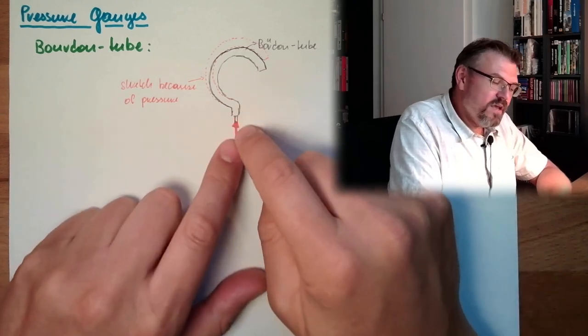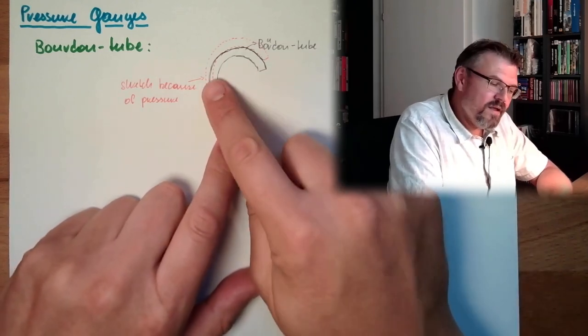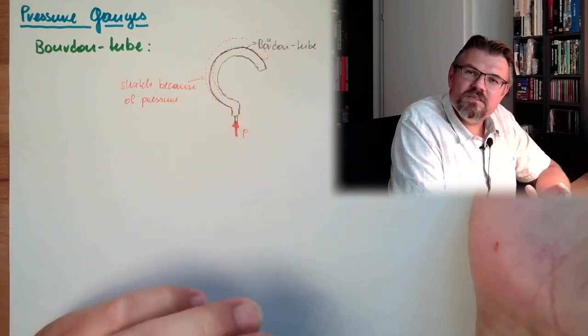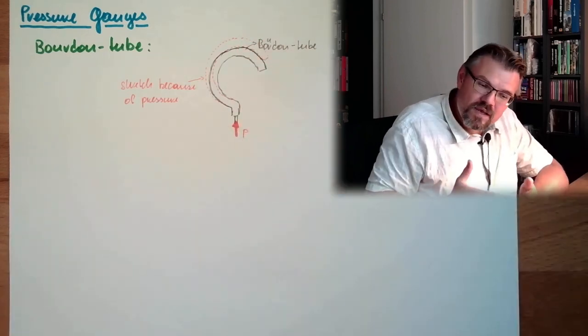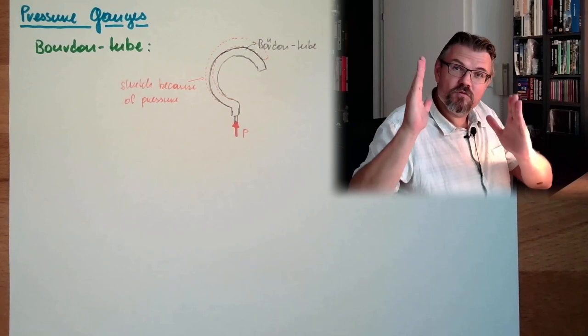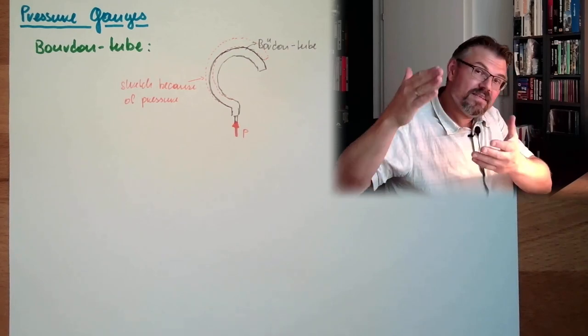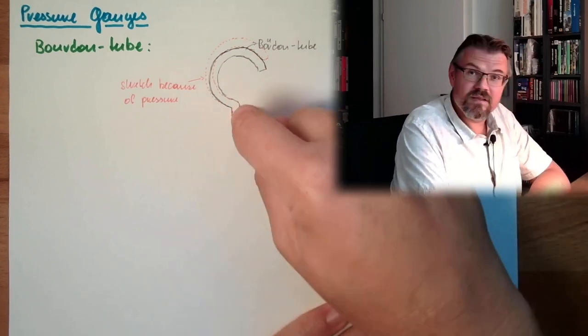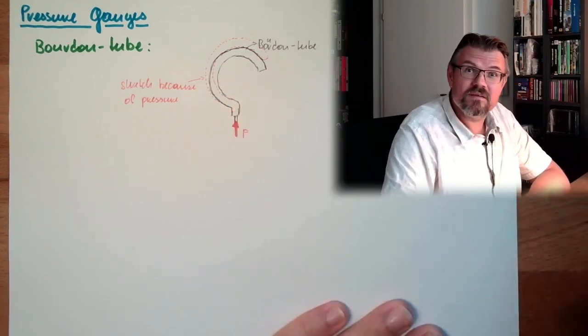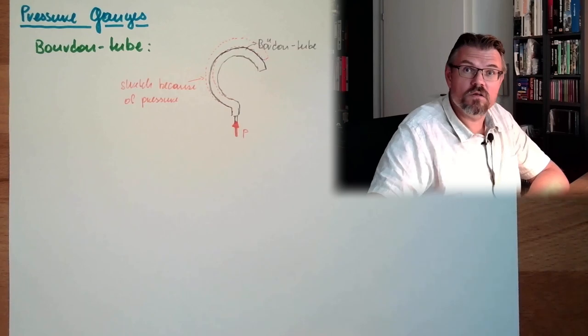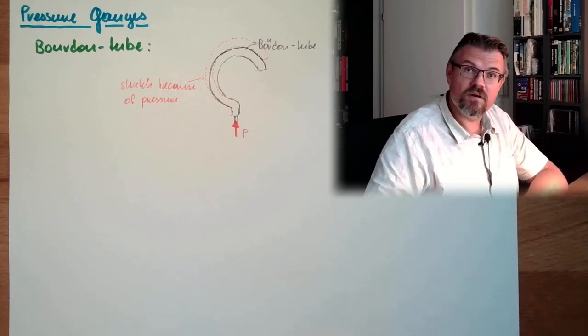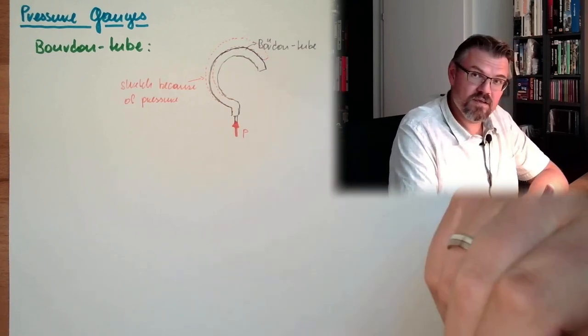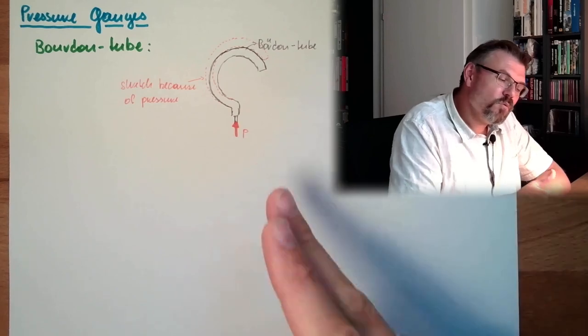As you can imagine, if there is too much pressure, then these materials... There is always a region where those materials stay elastic, and then they will get a permanent deformation. If this material is permanently deformed, this element, this gauge is gone, destroyed forever. So, it's not overload safe. It's quite sensitive.